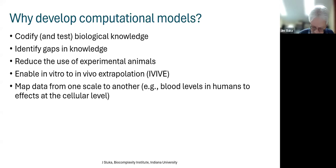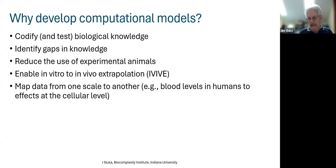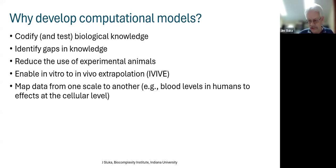What is the background and why would we want to develop computational models? A computational model is a great test of our understanding of a biological system. The first thing that happens when you try to set up a computational model is you discover all the things we don't know — it helps identify gaps in knowledge. Longer term, computational models are used to reduce the use of experimental animals, enabling in vitro to in vivo extrapolation — can you learn enough in a cell culture model to extrapolate to the whole body and reduce the number of animals needed?